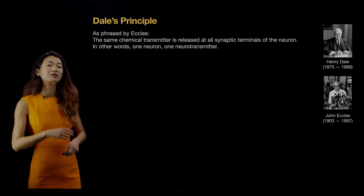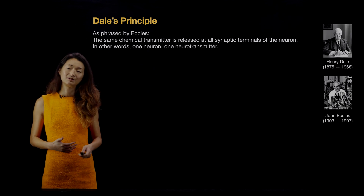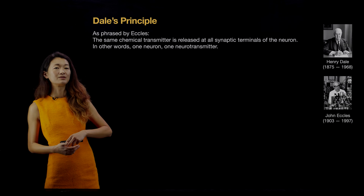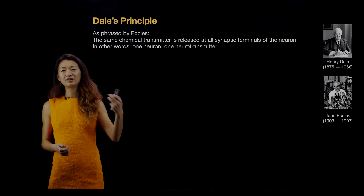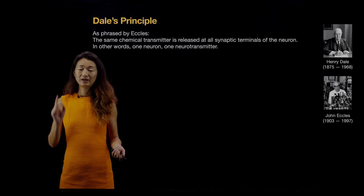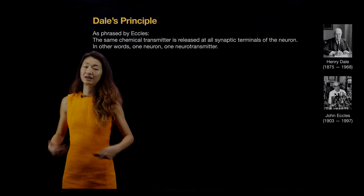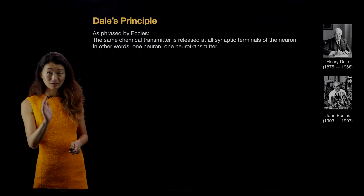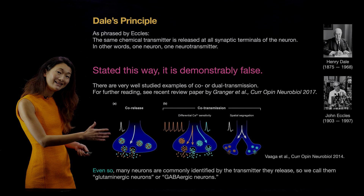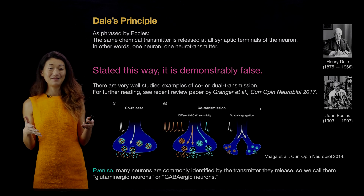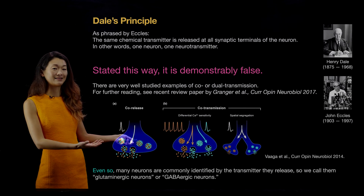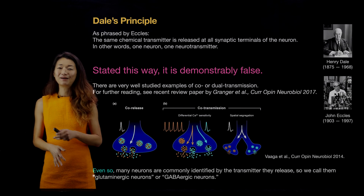We talked about glutamatergic and GABAergic cells as excitatory and inhibitory cells in the mammalian central nervous system. There is a principle known as Dale's principle, named after neuroscientist Henry Dale but actually articulated by John Eccles, which states: the same chemical neurotransmitter is released by all terminals of a neuron — in other words, one neuron, one neurotransmitter. As stated, this is demonstrably false. There are well-studied examples of co-transmission where a neuron packs different neurotransmitters in the same vesicles, or packs entirely different vesicles with different neurotransmitters and releases them simultaneously.